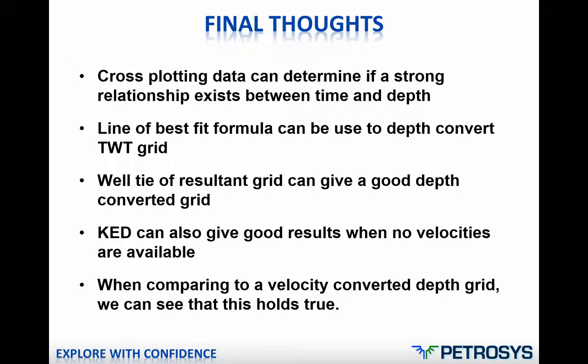Final thoughts: cross-plotting data can determine if a strong relationship exists between time and depth. Where we have a line of best fit formula, we can use it to convert our two-way time grid to depth using grid arithmetic, then well-tie that for a really good depth-converted grid. We can also use kriging with external drift when we have a good correlation between time and depth to convert time maps to depth without velocities. Comparing these to a velocity-converted grid shows the data is quite well represented.